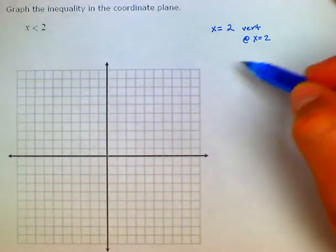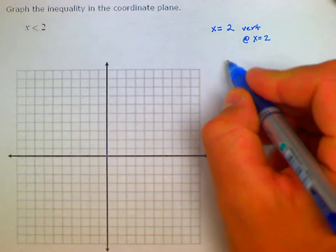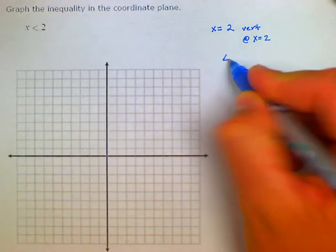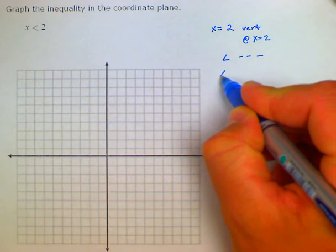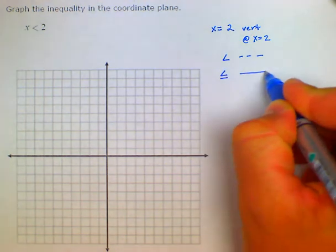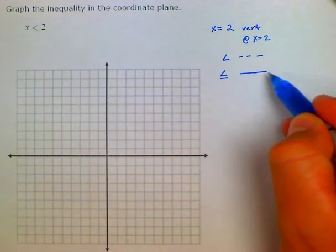For instance here, we have x is less than 2 but not equal to 2, so we're not going to have a solid line. When you have a less than sign, we're going to use a dashed line. When you have a less than or equal to sign, you would have a solid line because the line itself is included in the solution set.